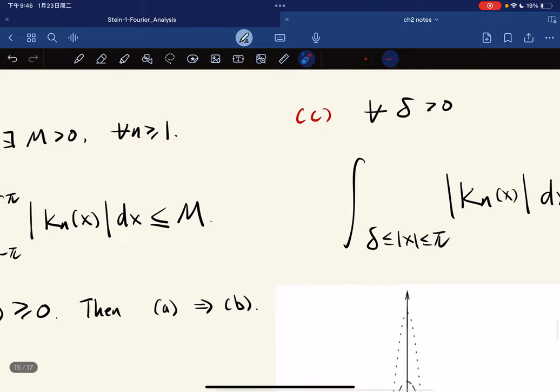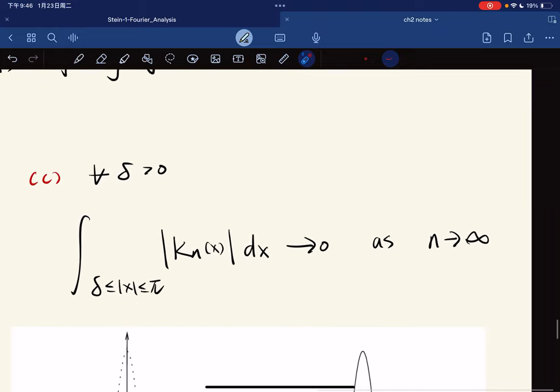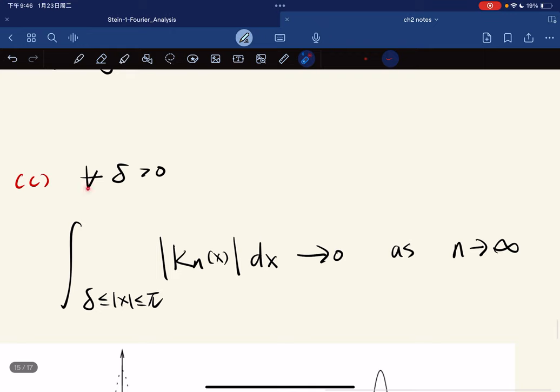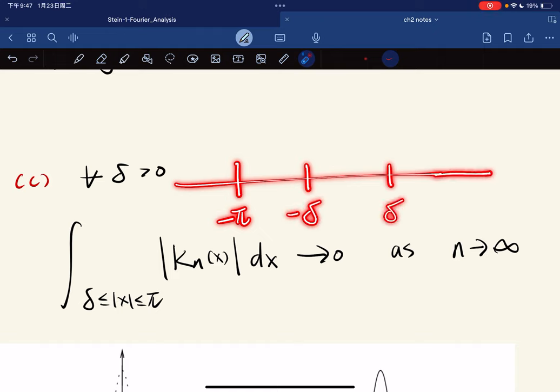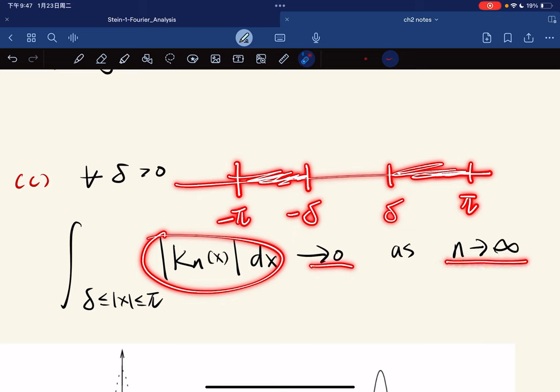And the third property is that for any delta greater than zero, be careful of this bound. So among these regions, the integral goes to zero as n goes to infinity. It's like something that peaks at the origin.